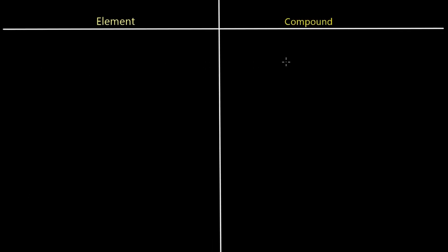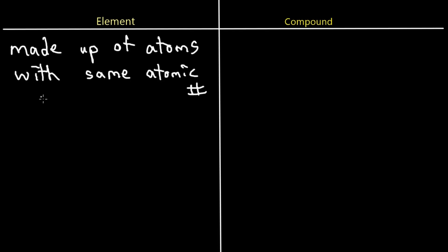Now let's talk about elements and compounds. Elements are substances made up of atoms of the same atomic number. All the elements on the periodic table are separate things because they have different atomic numbers — meaning different numbers of electrons, protons, and often neutrons — distinguishing them from one another, like sodium versus potassium or oxygen. Elements and compounds are both substances; they are not mixtures.